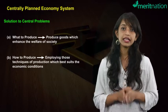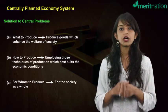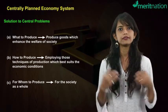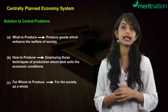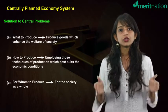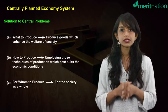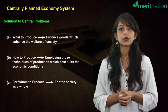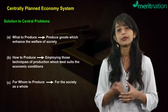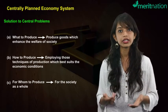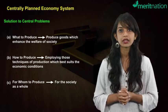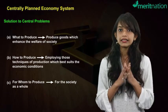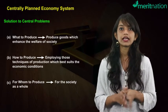Lastly, the problem of for whom to produce is solved by producing for society as a whole. Those goods and services will be produced which help in eliminating social problems such as poverty, unemployment, inequality, and so on. That covers the centrally planned economy.